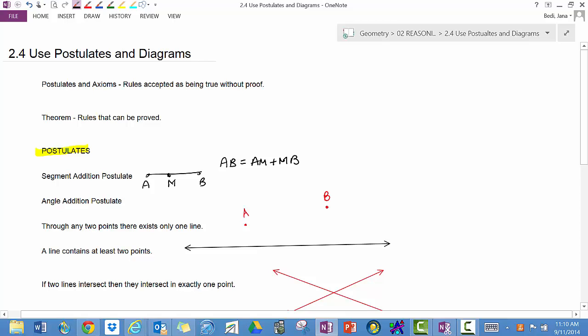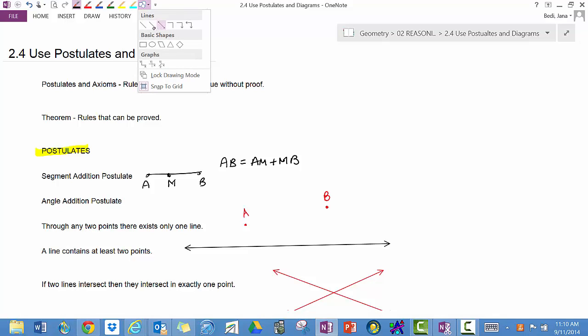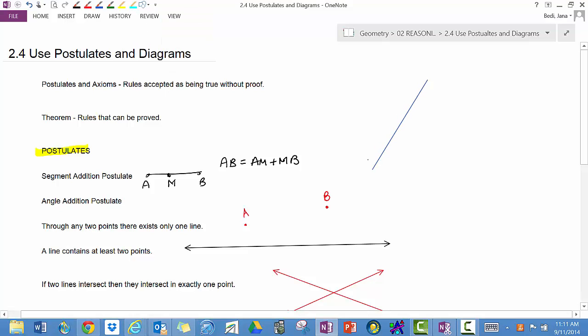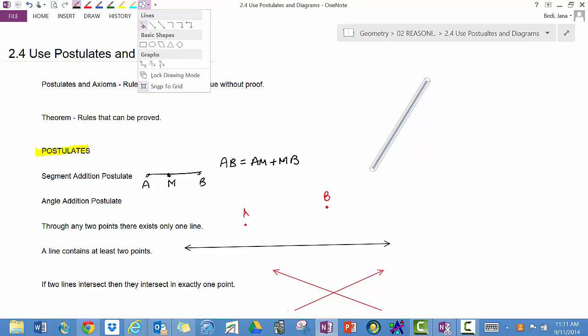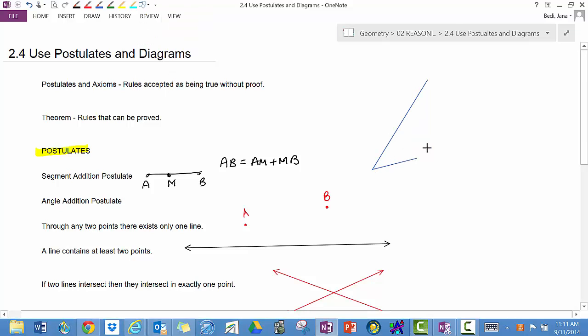In the angle addition postulate, similarly if you have, and I'm going to draw that over to the side just for room, so if you have an angle, two sides of the angle, and I'm just using segments which is A-OK, common ray in here.